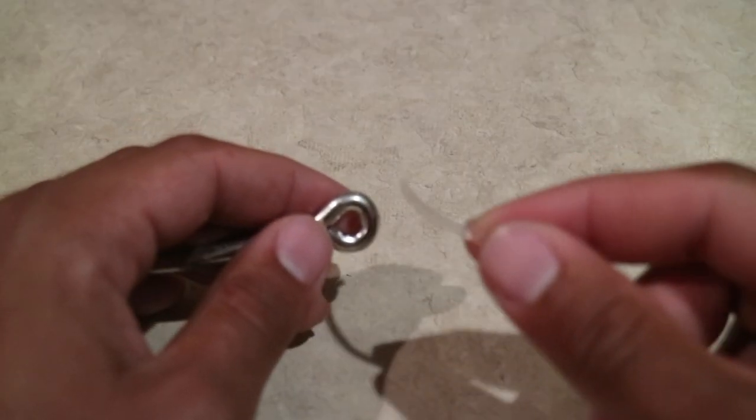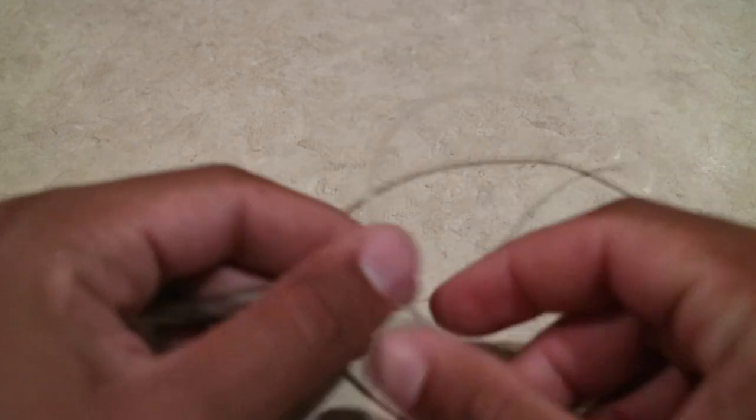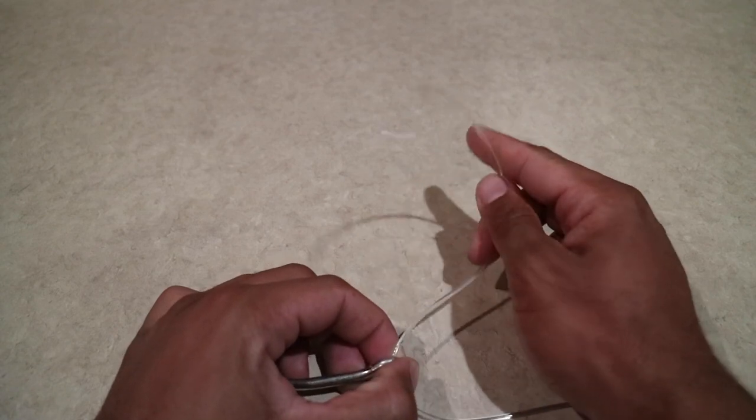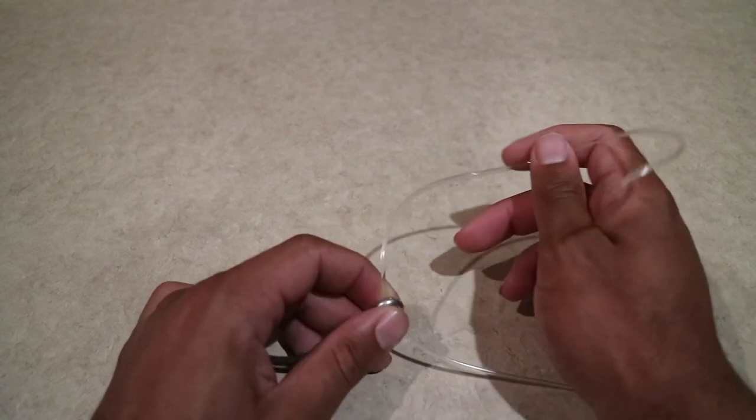What we're going to do first is put the 500 pound mono through the hole. And make sure you give yourself enough line that goes through the hole because you're going to need it.